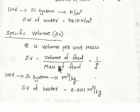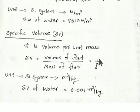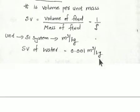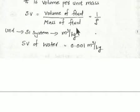Specific volume is volume of fluid divided by mass of fluid. Since density is mass per unit volume, specific volume is the reciprocal of density — one divided by rho. The SI unit is meter cube per kilogram. The specific volume of water is generally taken as 0.001 meter cube per kilogram, though density varies with temperature and pressure.